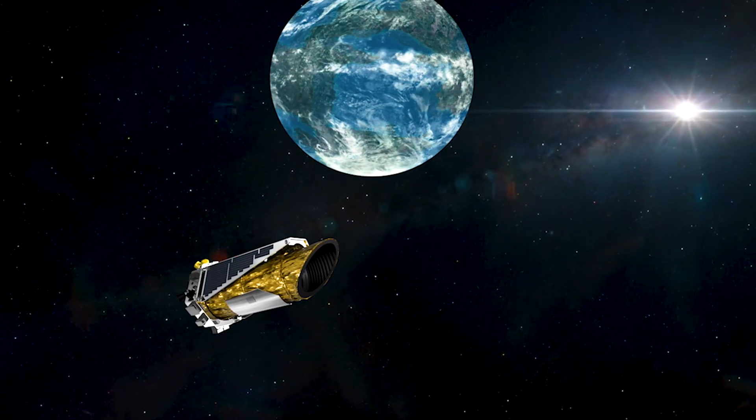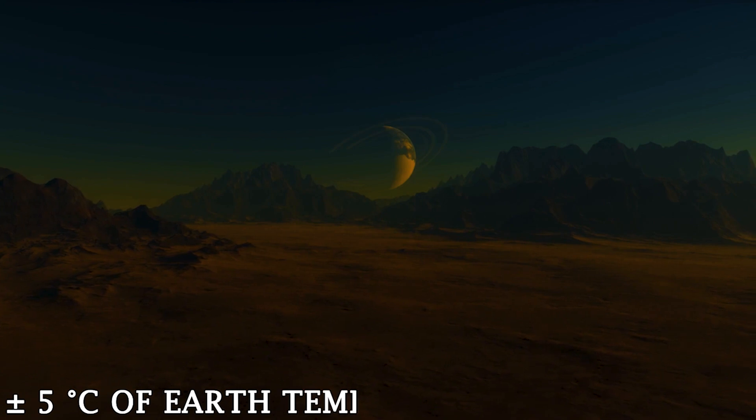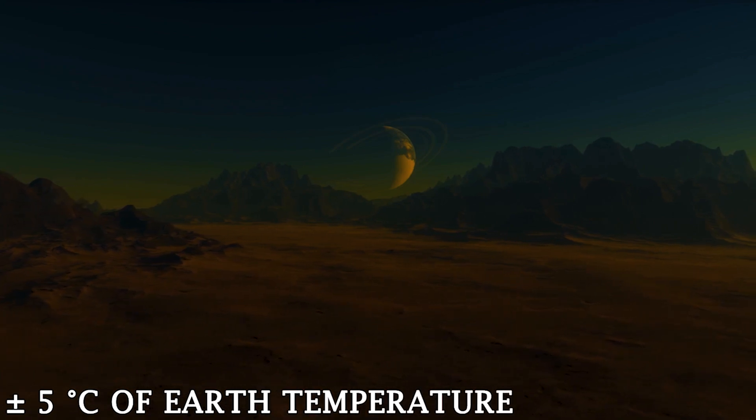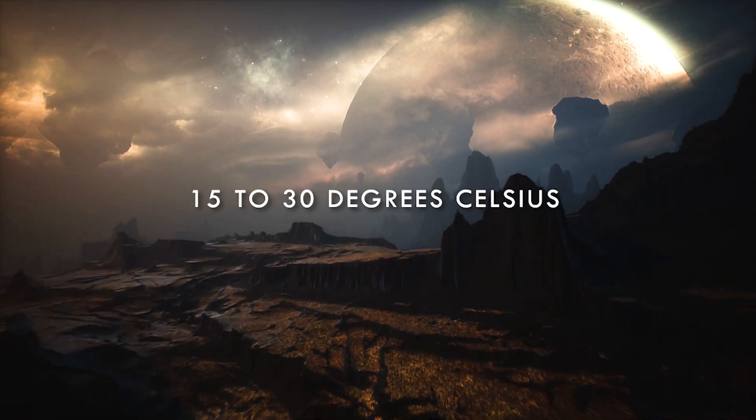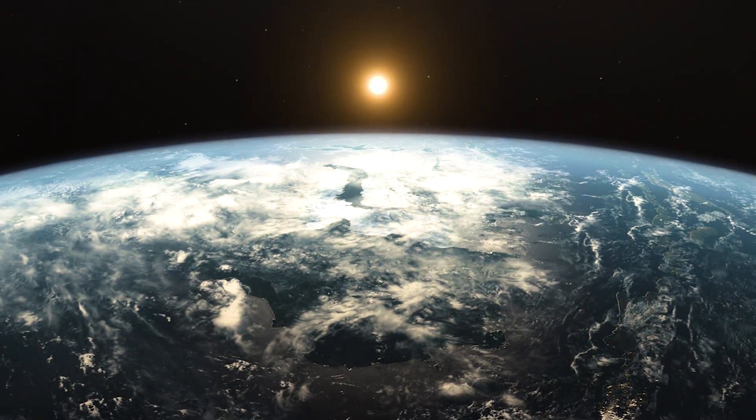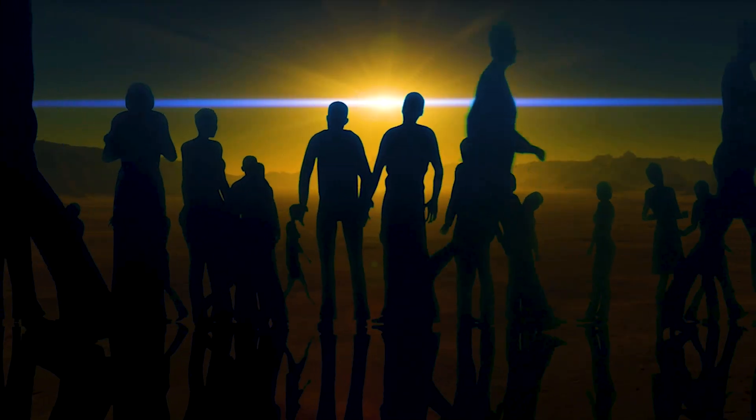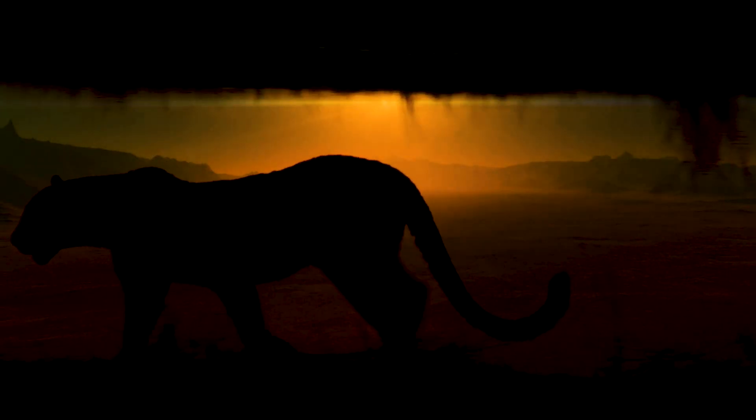Scientists search for planets with temperatures that are 5 degrees Celsius higher or lower than Earth's average temperature, ranging from 15 to 30 degrees Celsius. This temperature range is conducive to the survival of not only humans, but also many other animals.